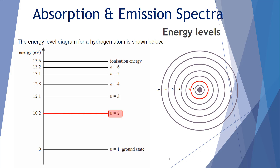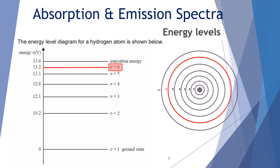We move out one to the first excited state, or n equals 2. Then the second excited state, n equals 3; third excited; fourth; fifth; and finally, one state higher, we reach the ionization energy, whereby electrons are completely removed from the atom altogether.